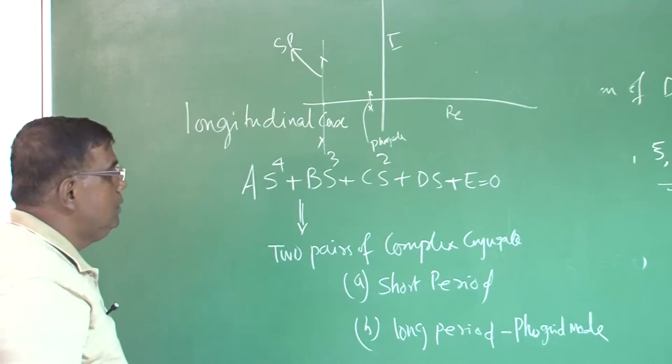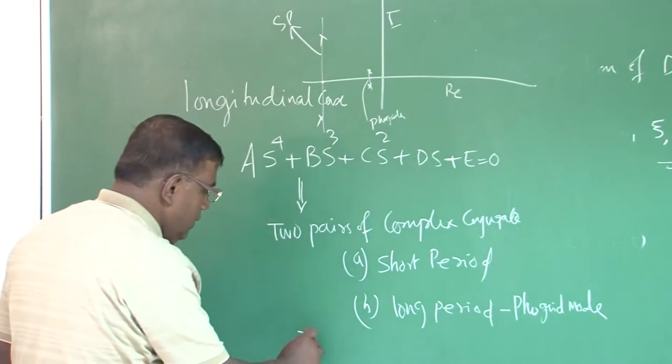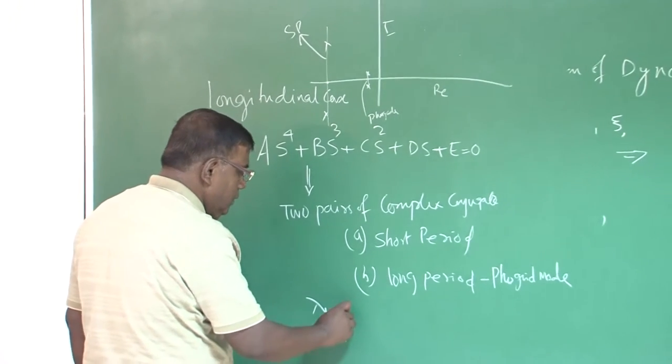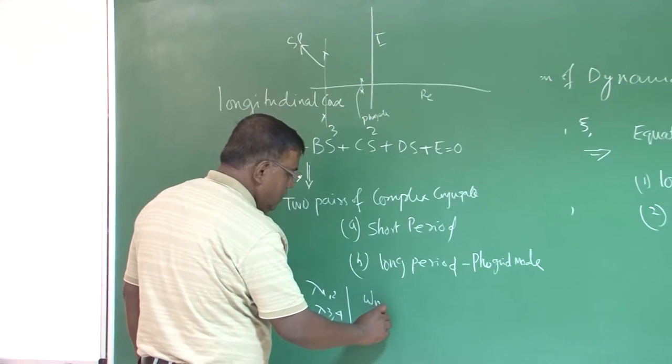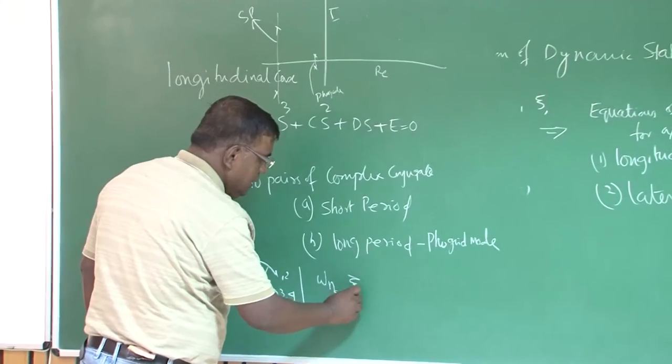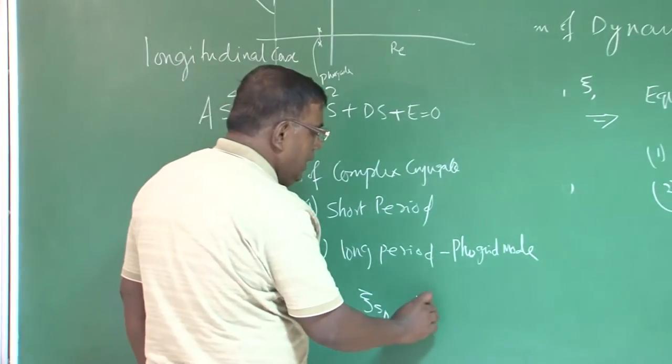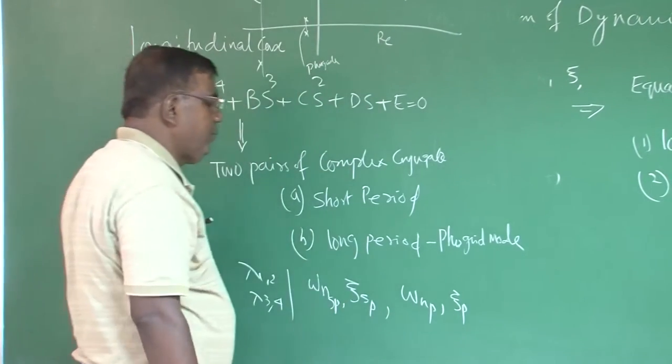After knowing these roots, we know how to find, once I know lambda 1, lambda 2, lambda 3, lambda 4 which are complex conjugate, I know how to find out natural frequency short period, zeta short period. Similarly omega n phugoid and zeta phugoid, right. This is one part we have done.